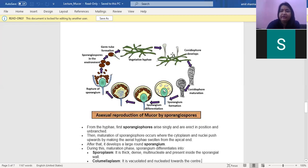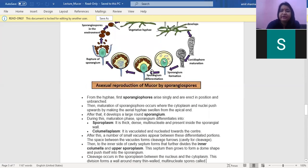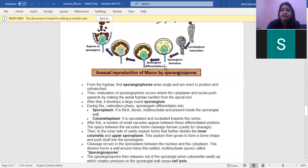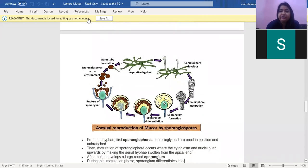Sporangiospores usually arise singly and are erect in position. On maturation, the cytoplasm of the nuclei push towards making the aerial hyphae swollen in form, and this swollen stage is called sporangium. The sporangium has two parts, the columelloplasm and the sporoplasm. Sporoplasm is thick, dense, multi-nucleate, and columelloplasm is vacuolated and nucleated, and is present towards the center. The cleavage occurs in the sporoplasm between the nucleus and the cytoplasm, forming thin-walled multi-nucleate spores called sporangiospores. The sporangiospores are then released out because of the pressure and on their release, they form a germ tube.